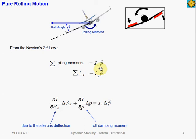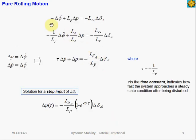We apply small perturbation variables and expand the moment terms to get the equation of motion. This term describes the rolling moment due to aileron deflection, and this term describes the roll damping moment. If we rearrange the equation and rewrite the moment in terms of stability derivatives, we get the equation for pure rolling motion.